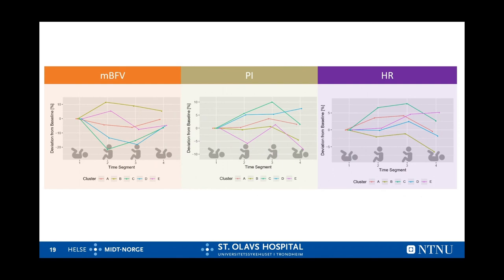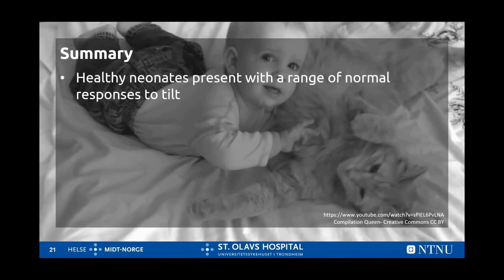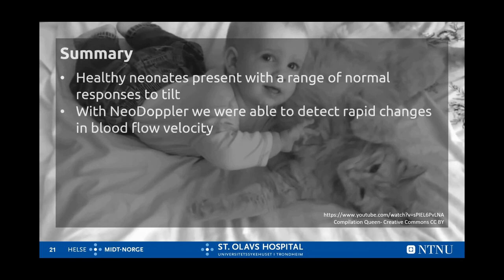Here you can see how the mean blood flow velocity, pulsatility index, and heart rate change from baseline prior to tilt and during the test. You can see that some of the differences persist through the test. We couldn't find any predictors of cluster assignment, and the neonate often changed clusters from day to day, but that is in line with earlier research. If you look carefully, you can see that the clusters behave differently and have a kind of signature. For example, cluster C is the only cluster with a decrease in blood flow velocity and an increase in both pulsatility index and heart rate. In other words, we cannot distinguish the responses with a single feature alone, but only when looking at several at once. To summarise, we found that healthy neonates present with a range of normal responses to tilt, and with Neo Doppler we were able to detect rapid changes in blood flow velocity. Thank you for listening.